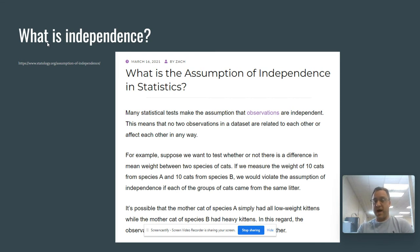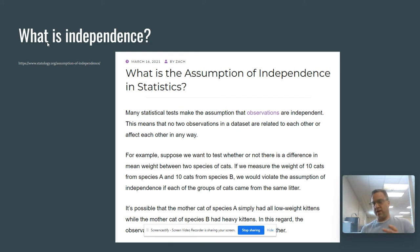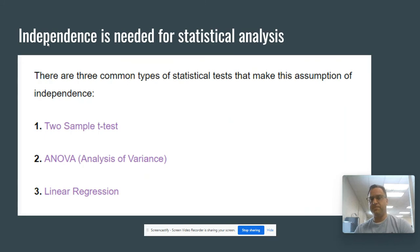It might be possible that the mother of a calico cat has skinnier kittens, whereas a Siamese cat might have heavier kittens. So we need to make sure that in our sampling, we don't sample two kittens from the same litter — having the same mom — otherwise they would be dependent.